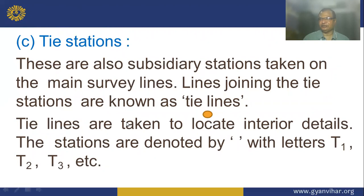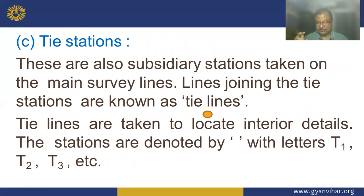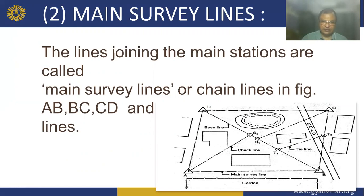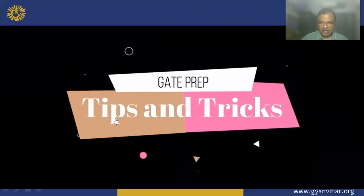Tie stations are also subsidiary stations taken on the main survey line; the line joining tie stations is known as the tie line. Tie lines are taken to locate interior details. Tie stations are denoted by T1, T2, T3, etc. The main survey lines — also called chain lines — join the main stations. This is a clear description of the lines and how they are arranged.